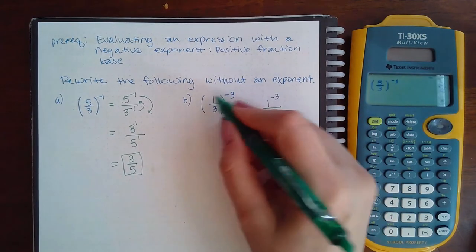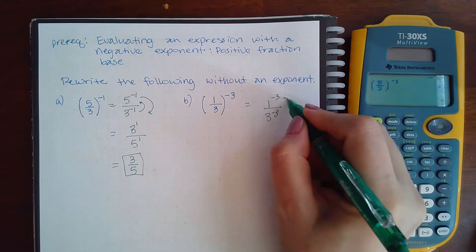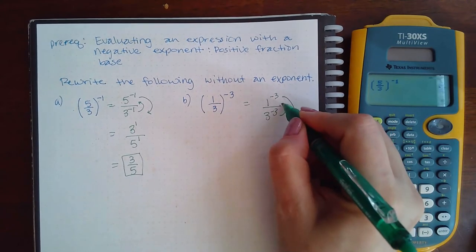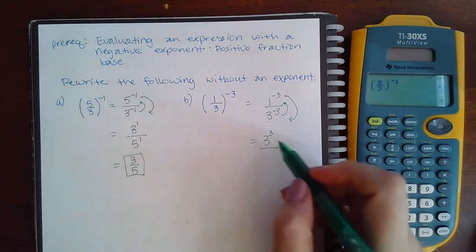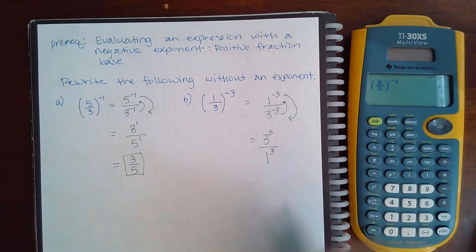Give the top and the bottom this exponent, and then the top will go downstairs, the bottom will go upstairs. I'll end up with 3 to the third power—positive third power—on top and 1 to the positive third power at the bottom.